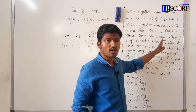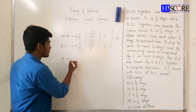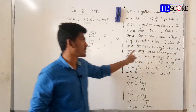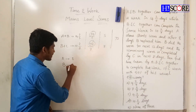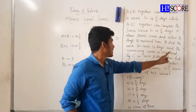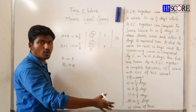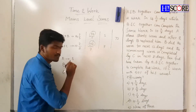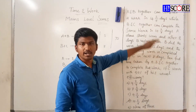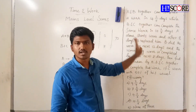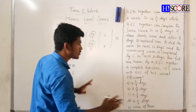A alone starts the work. After 8 days, B replaces A and did the work for the next 12 days. The remaining work is completed by C in the next 5 days. Find the time taken by A, B, and C together to complete the work.